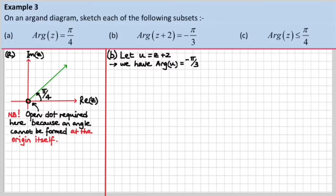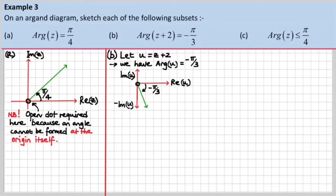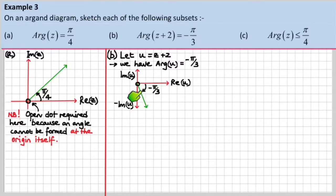If we let u equal z plus 2, we know then what we're really dealing with here is that the argument of u is minus π/3. So there's an Argand diagram to represent that, but we've got u here instead of z. We go in the clockwise direction — we've got an angle of π/3 in the clockwise direction. Now all we've got to do is work out how to get from u back to z, and it's very, very simple.